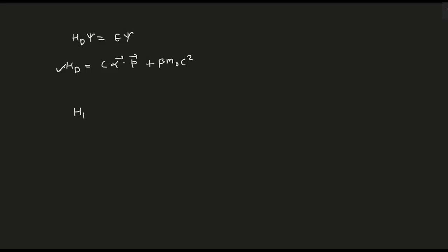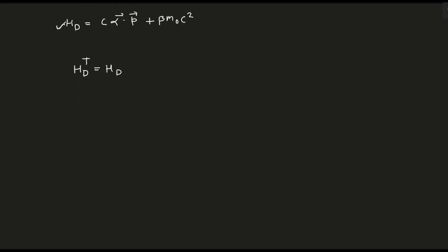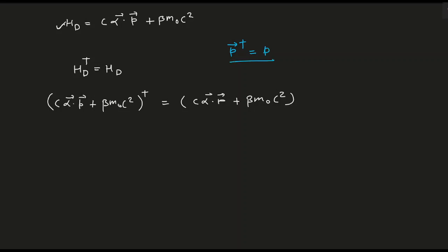The condition for a Hermitian operator is H† equals H_D. So let's take the dagger of H_D, which is C(alpha · P) + beta M₀C². Taking the dagger, this should equal C(alpha · P) + beta M₀C². Now, P is a physical observable, so P† equals P. Also, recall the mathematical property that (AB)† equals B†A†. We will use that here.